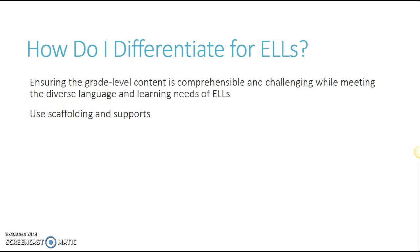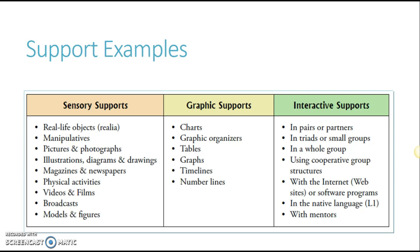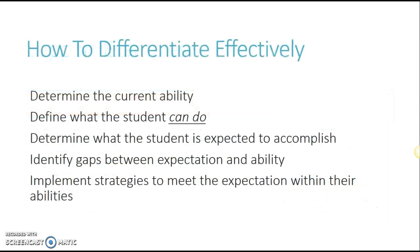To differentiate for our English language learners, make sure that the content is comprehensible, that they can understand it, that it is challenging, but that we also meet their language needs. We're going to use scaffolding and supports. Scaffolding is when you build on the skills that they already have. Supports are those tools or strategies that you use to make sure that they can move from one level to the next. We differentiate effectively by determining where they are, figuring out what they can do, looking at the gap between what they can do and what they're expected to do, and then figuring out strategies to get them where they need to be.